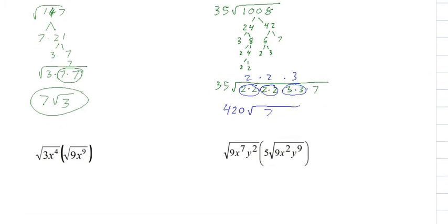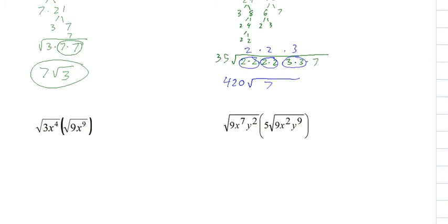So let's try one with variables and then I'll let you try one. Since they're both on the inside, we multiply them together - that's 27. And then whenever you multiply you add the exponents, so 4 plus 9 is 13.